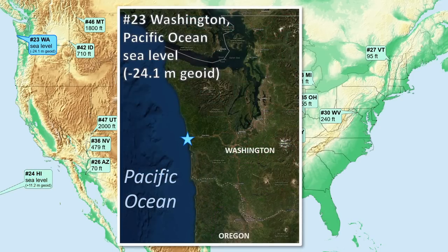Number 23 is Washington — Pacific Ocean, sea level. The geoid here is the next highest, due to crustal thickening in the subduction zone tectonic setting. The geoid low point falls almost due west of the state's high point, Mount Rainier, and has the second highest slope angle connecting state low point to high point, after Hawaii.